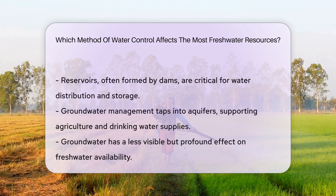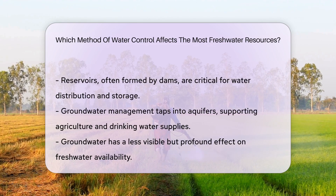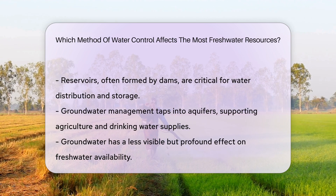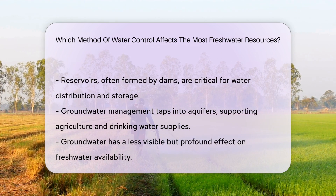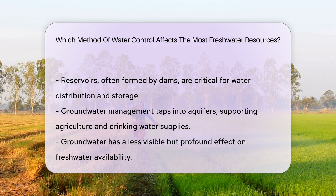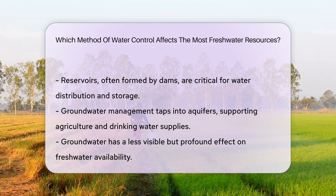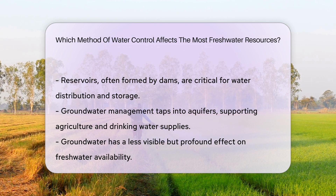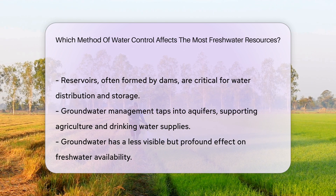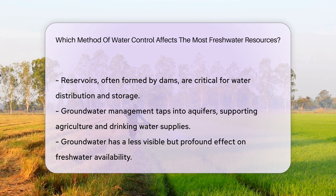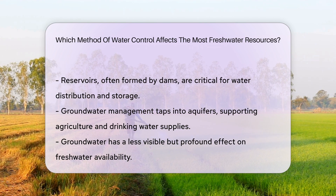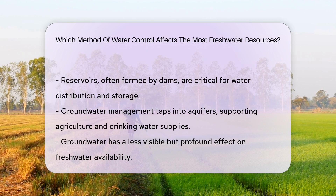Reservoirs are the colossal cups that hold our water supplies. They are often formed by dams and are central to water distribution. Their sheer size makes them significant in freshwater management. Groundwater management involves tapping into aquifers. This method supports agriculture and drinking supplies, and it's less visible but profoundly affects freshwater availability.